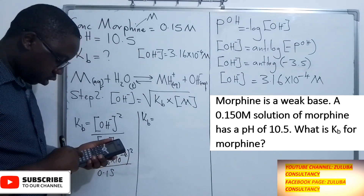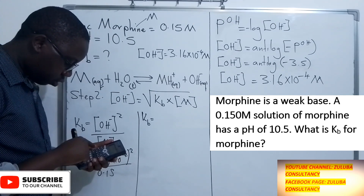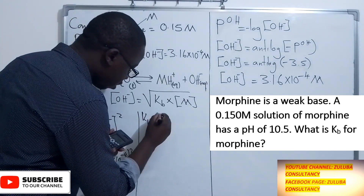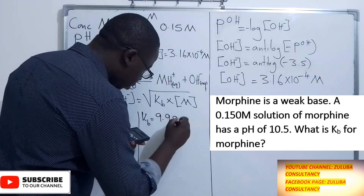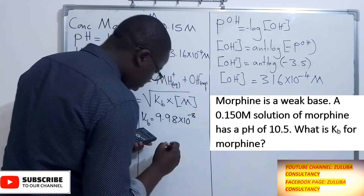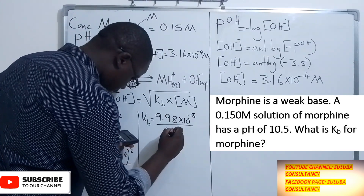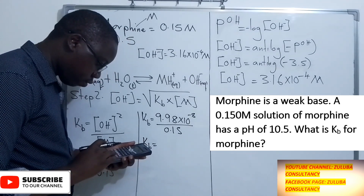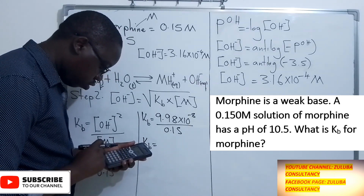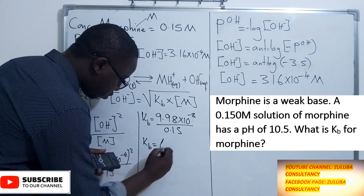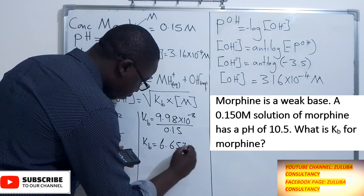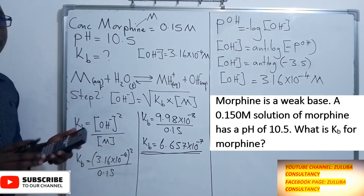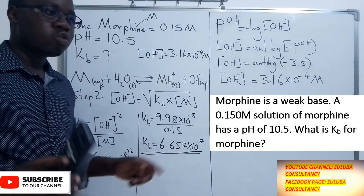Let's compute (3.16 × 10⁻⁴)² — this gives us 9.98 × 10⁻⁸. This should then be divided by 0.15. So Kb = 9.98 × 10⁻⁸ / 0.15, which gives us 6.657 × 10⁻⁷ as the value for Kb. This is the ionization constant we have calculated.